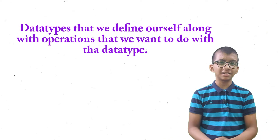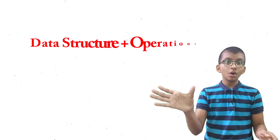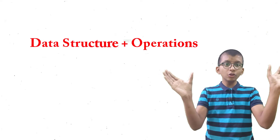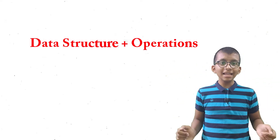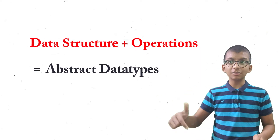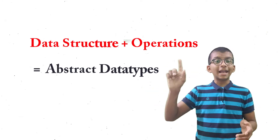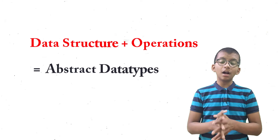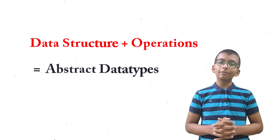But defining user-defined data types along with operations is a little bit more complicated. So for simplifying this process, we have ADT — abstract data types. What we do is combine our data structure with these user-defined data types together with the operations needed. We combine data structures with the operations, whatever is needed, and this is called abstract data types. Some examples of abstract data types are linked lists, stacks, queues, and so on — these are examples of ADTs.